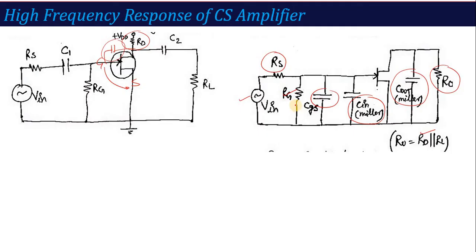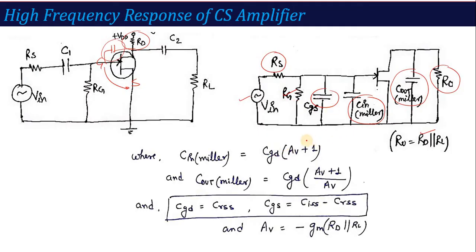If we talk about C_in Miller, as per Miller theorem, C_in Miller is equal to C_GD into A_V + 1. What is C_GD? The capacitance between gate and drain terminal. And what is C_out Miller? That is C_GD(A_V + 1) divided by A_V. Now here, there is a capacitance of C_GS. Maybe the question is directly given, and maybe you have other capacitances given in the question like C_RSS internal capacitance and C_ISS minus C_RSS.